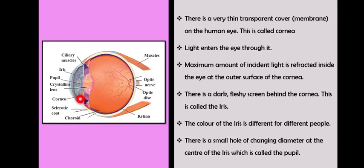There is a small hole of changing diameter at the center of the iris, which is called the pupil. This will keep changing its diameter depending on how much light to allow inside.